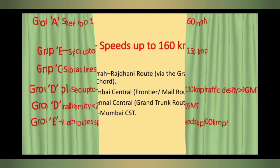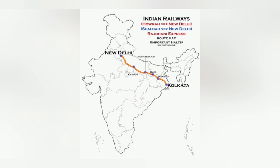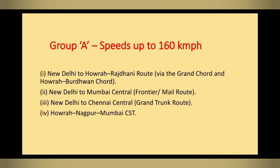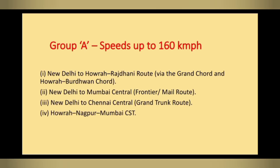We can see some important routes in the southern region. First, Group A routes: New Delhi to Howrah Rajdhani route is a Group A route. New Delhi to Mumbai Central route is a Group A route. New Delhi to Chennai Central Grand Trunk route is a Group A route.